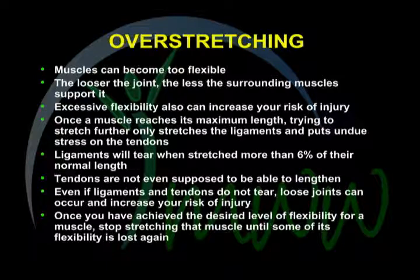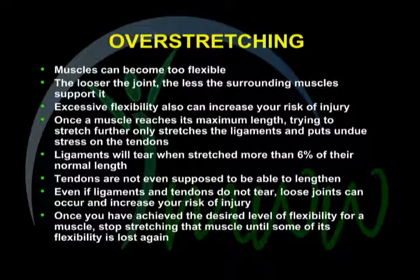Over-flexibility. It is possible for a muscle or joint to become too flexible because there is a trade-off between flexibility and stability. As you get looser or more limber in a particular joint, the joint receives less support from its surrounding muscles. Excessive flexibility can be just as bad as not enough flexibility because both increase your risk of injury. Once a muscle has reached its absolute maximum length, attempting to stretch the muscle further only serves to stretch the ligaments and put undue stress on the tendons. Ligaments will tear when stretched more than 6% of their normal length, and tendons are not even supposed to be able to lengthen. Loose joints and a decrease in joint stability can occur, vastly increasing your risk of injury. Once you have achieved the desired level of flexibility and maintained it for a solid week, you should discontinue any isometric or PNF stretching of that muscle until some of its flexibility is lost.